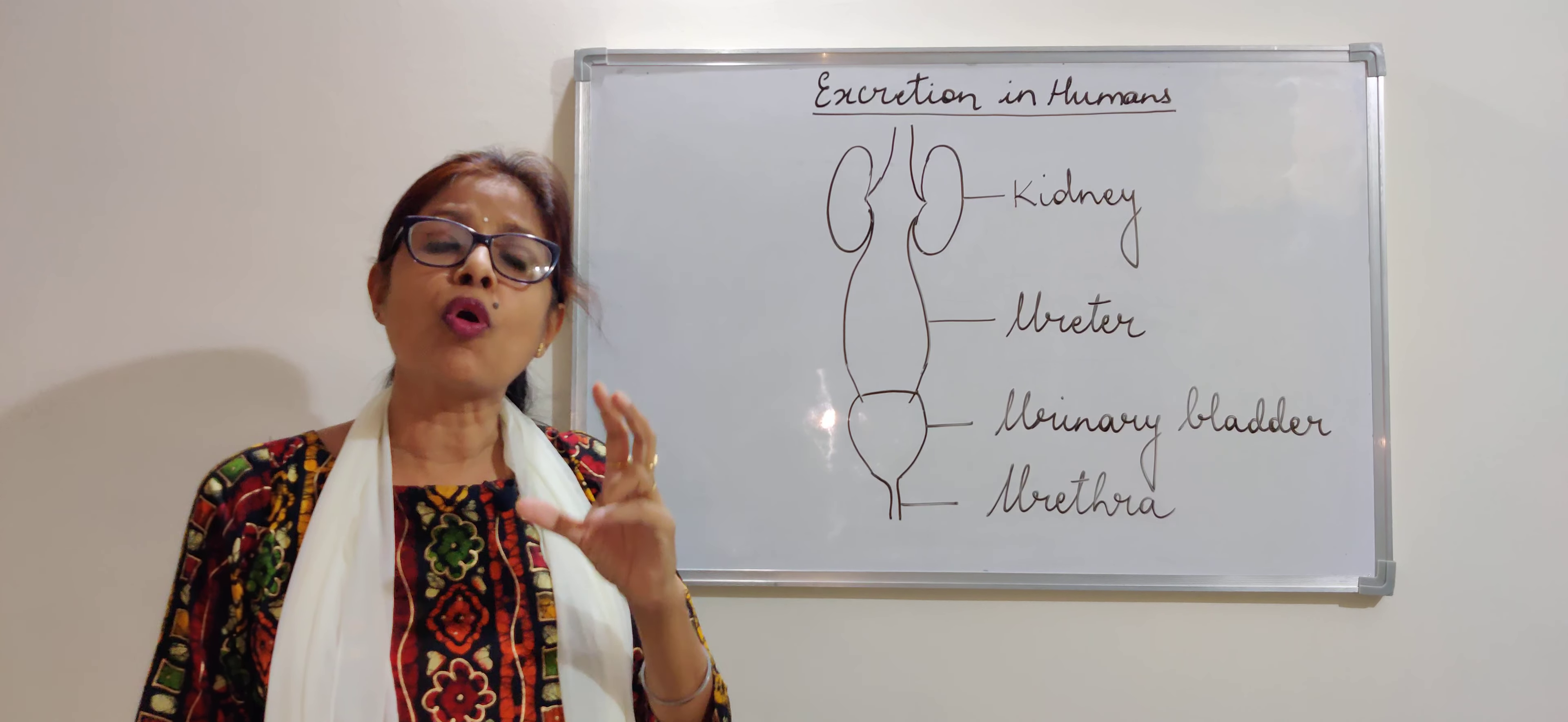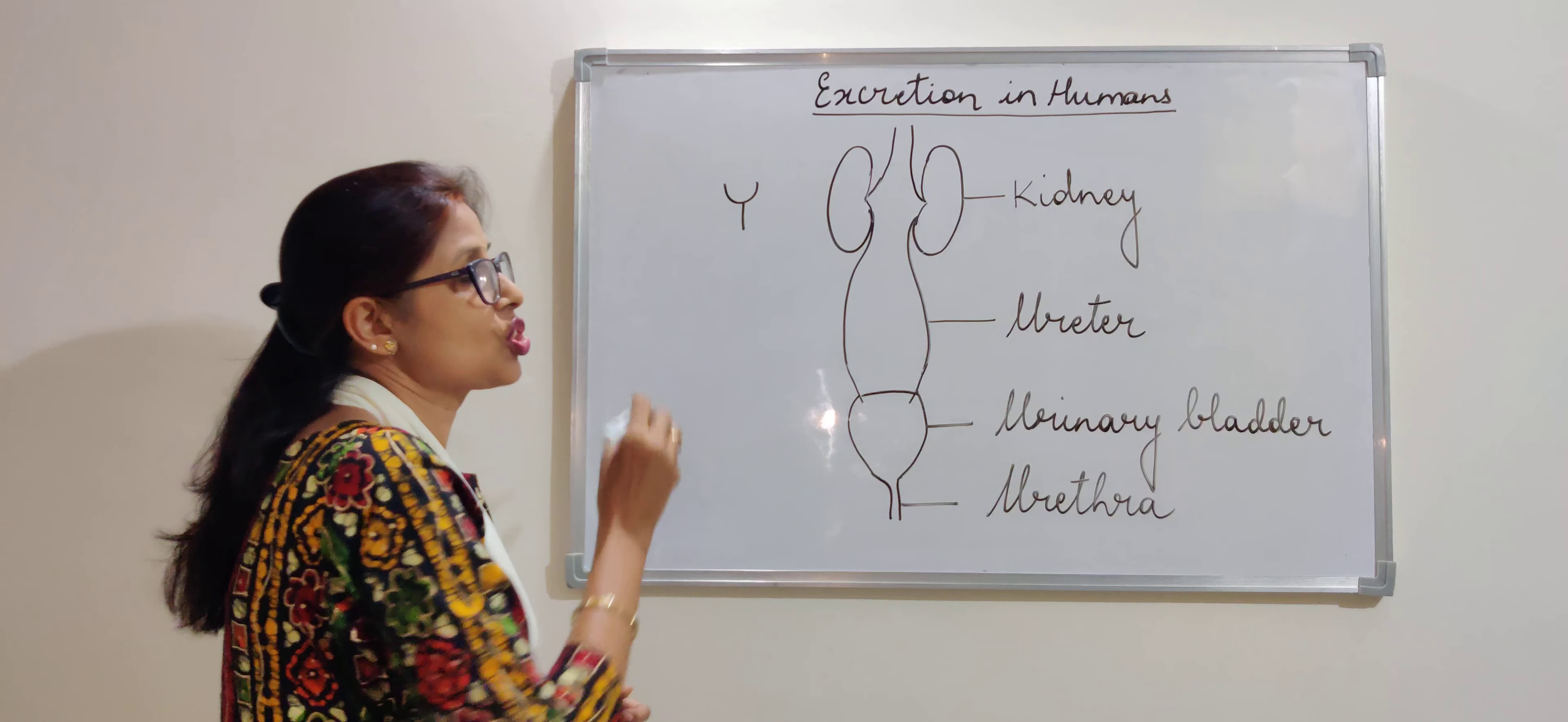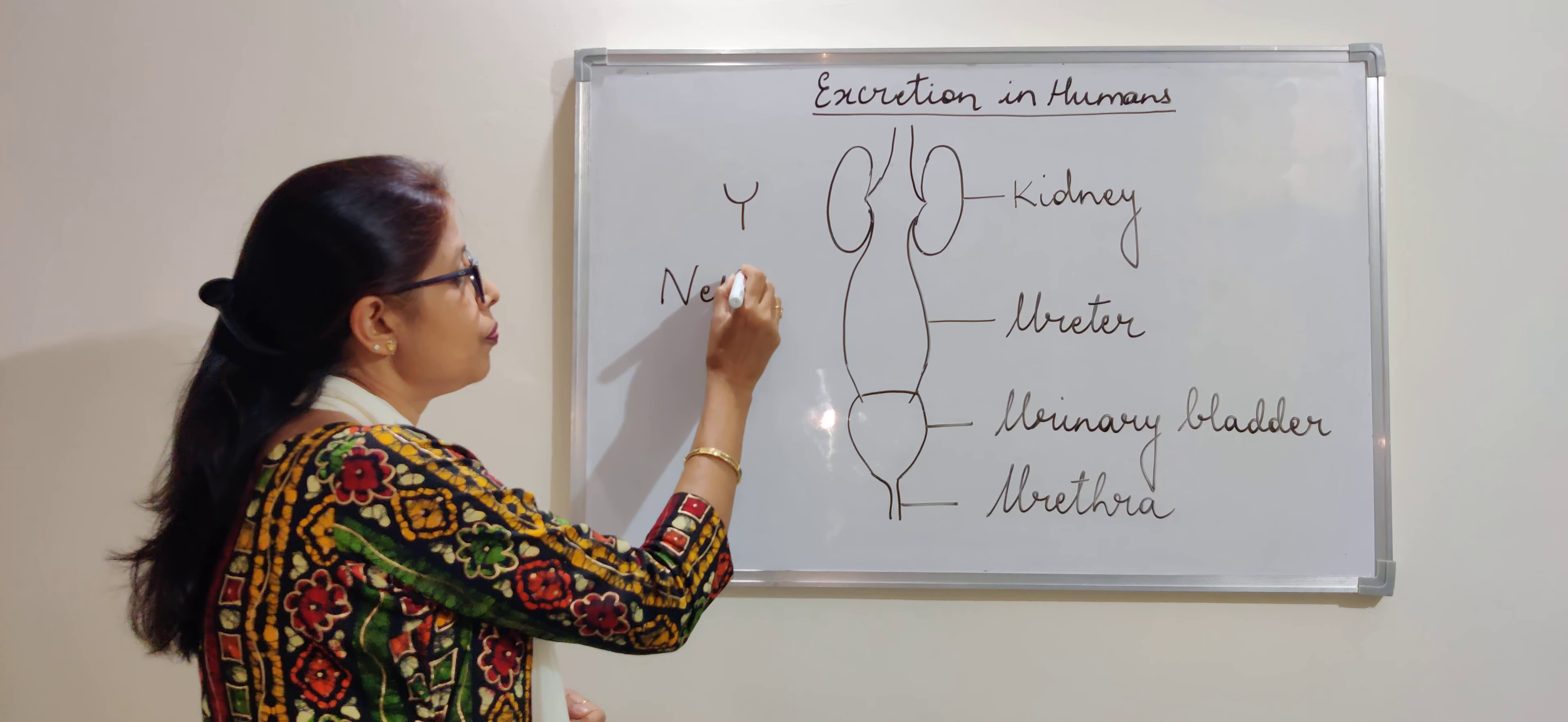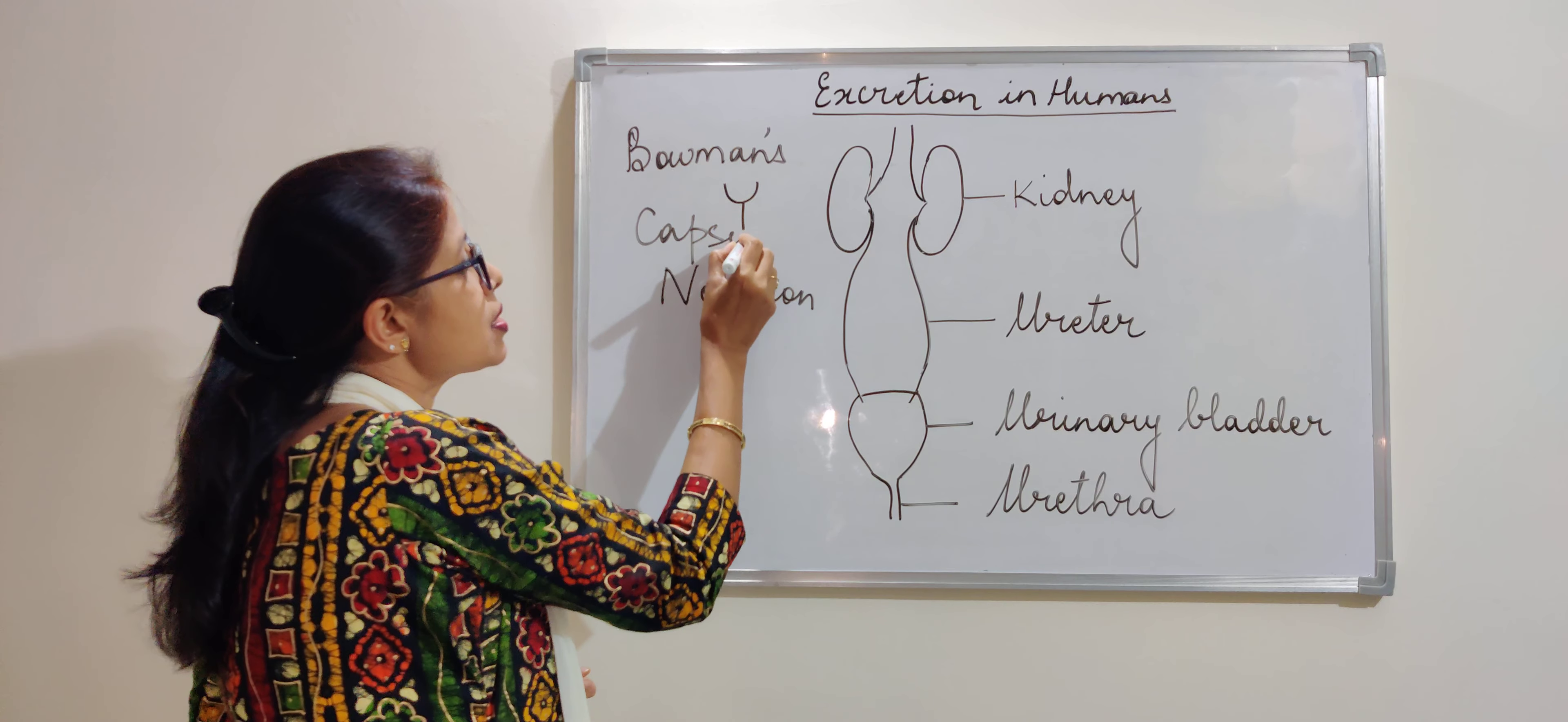Kidneys are very small structures. They are not big but they are important as well because when we see the inside of the kidney, we see that there is a cup-shaped structure. This cup-shaped structure is one unit of kidney, what we call as the nephron. This cup-shaped structure is called the Bowman's capsule.